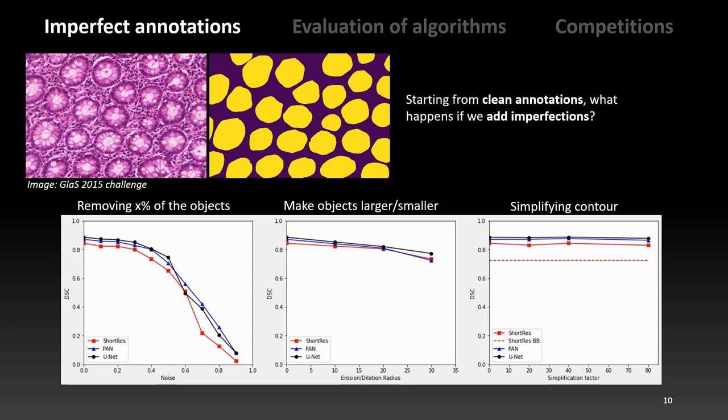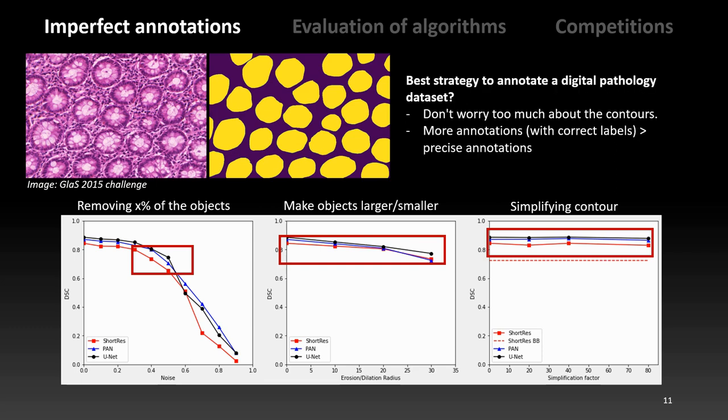We trained three different deep learning models on corrupted datasets with different levels of corruption. Our results show that there is a certain natural robustness to some imperfections. And in particular, the models are very robust to contour simplification, even when only four or five points remain in the contour. Removing too many objects, however, lead to a strong performance drop. This indicates that, when annotating datasets for deep learning models, the best strategy for the expert pathologist could be to provide a rough set of simplified annotations, while making sure that few objects are missed.